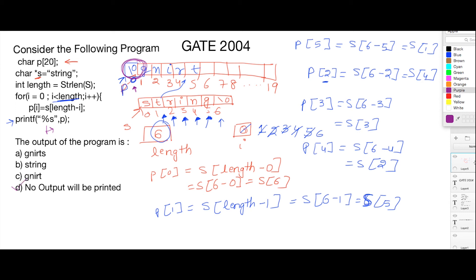So the correct answer is option D. If you still wonder why nothing is printed, please check my other video where I discuss what a string is and the difference between %s and %c. %c prints just one character, while %s prints everything from the given index location until it finds a null character. In this case, the correct output is that nothing is printed. Thank you.